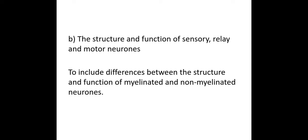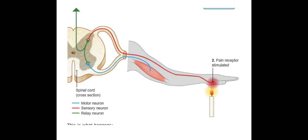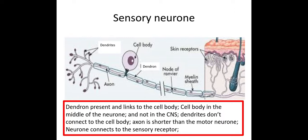Welcome biologists to this session where we're going to be taking a look at the structure and function of the sensory, relay and motor neurons, and also what myelination is. Just to remind you, a stimulus is detected by a receptor. This sends a nerve impulse along the sensory neuron, which then transfers it into a relay neuron, which is then sent along the motor neuron, which is linked to an effector. The effector is normally a muscle or a gland that brings about the change. So the first neuron we're going to look at is a sensory neuron.